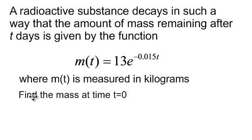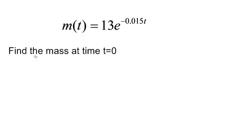They want us to find the mass. Find the mass at time t = 0. Well, I might have already given this answer away, but let's work it out. So here we go. t = 0. That's at the very beginning. m(0), when I plug in 0, I will get 13e^(negative, once again, t = 0).